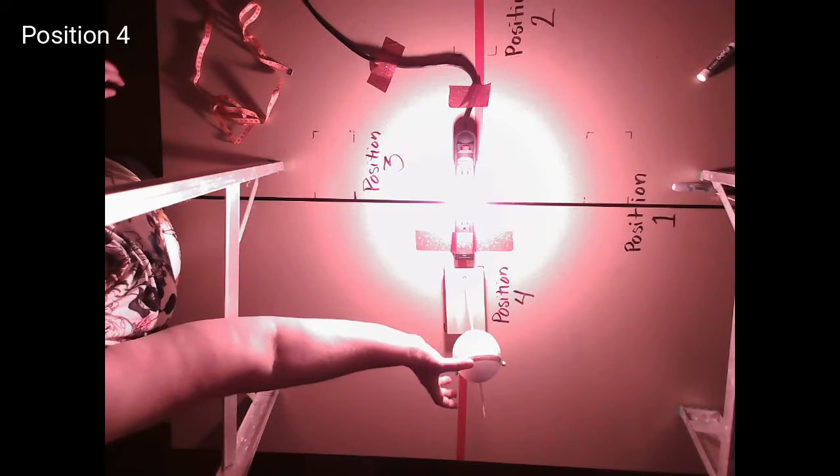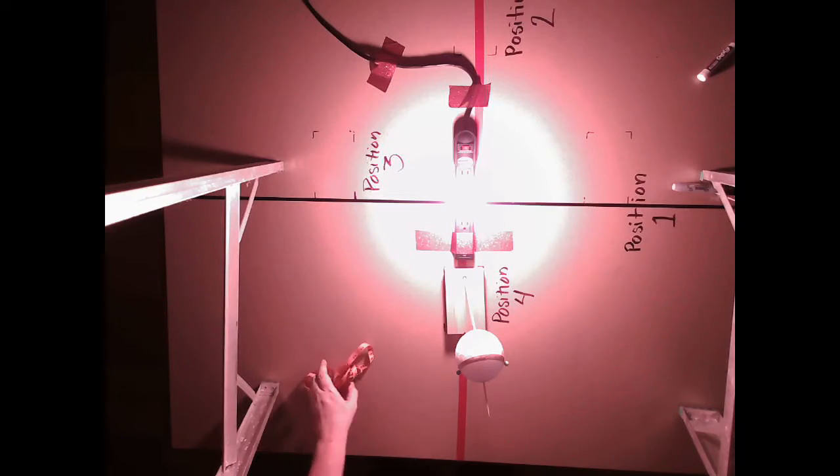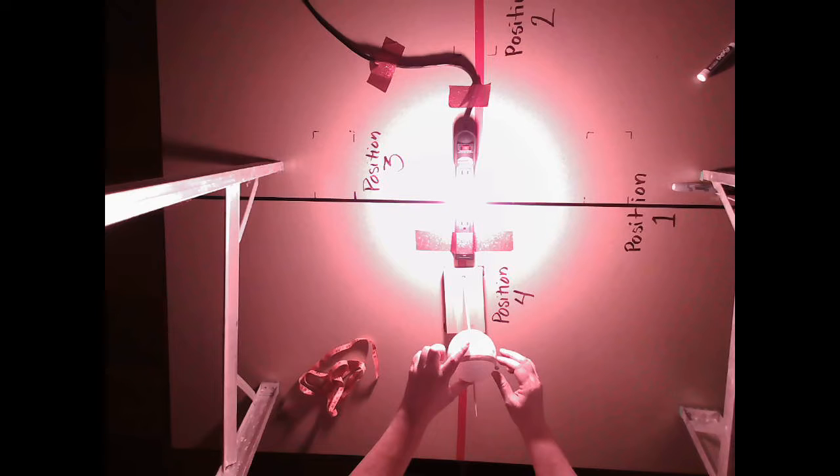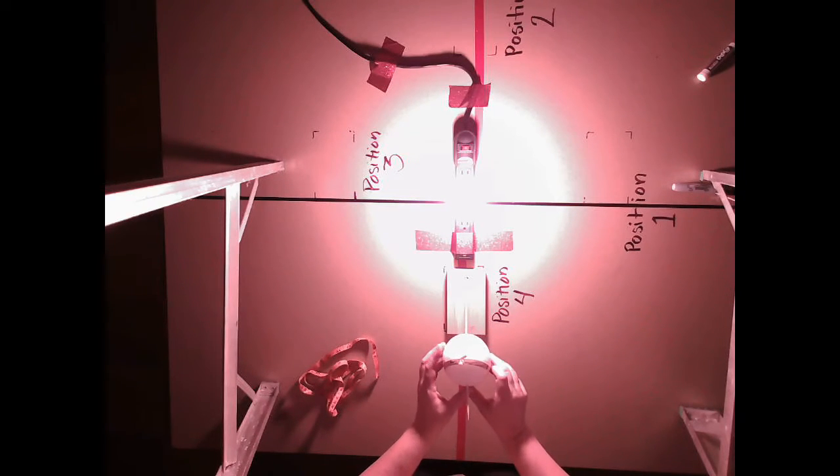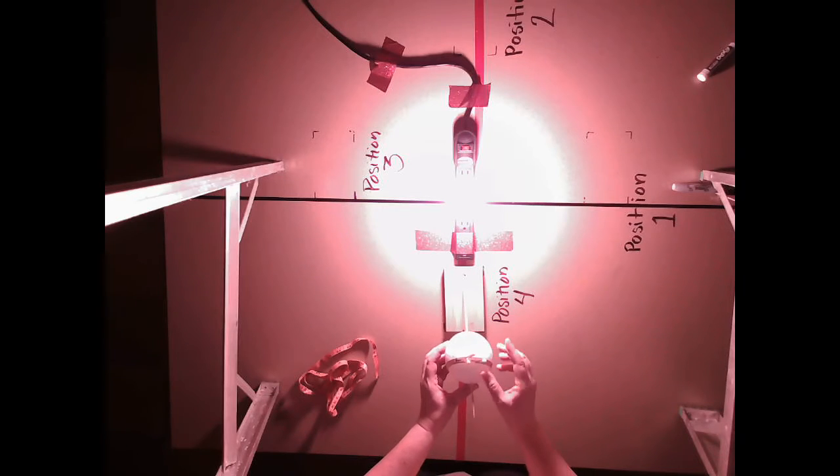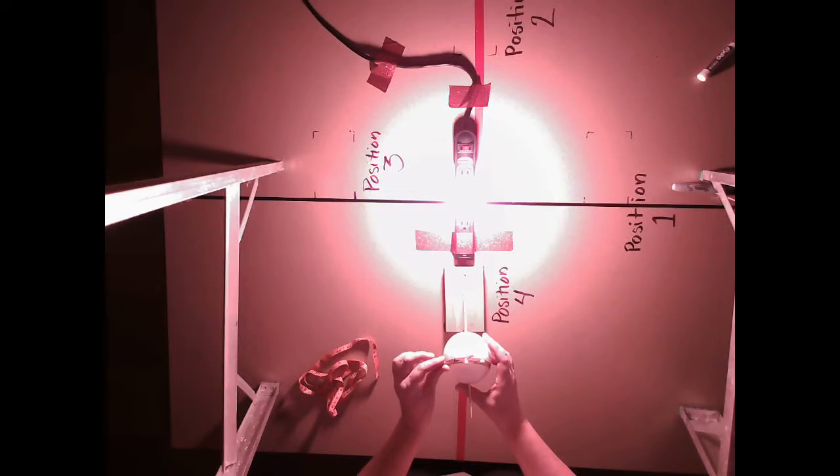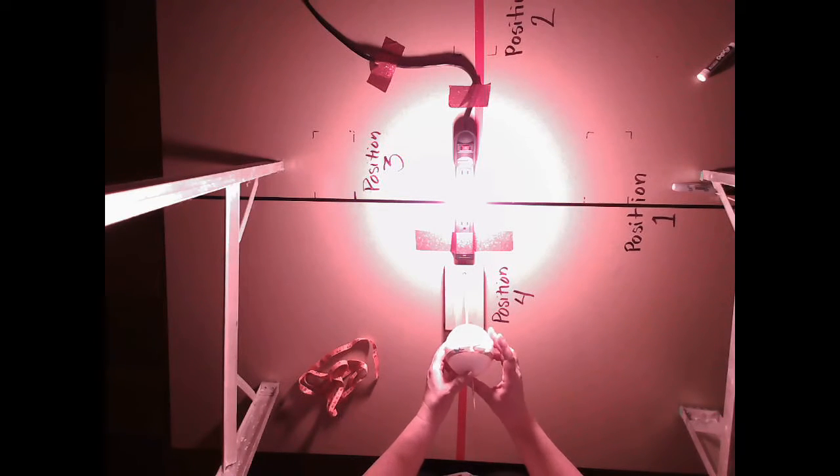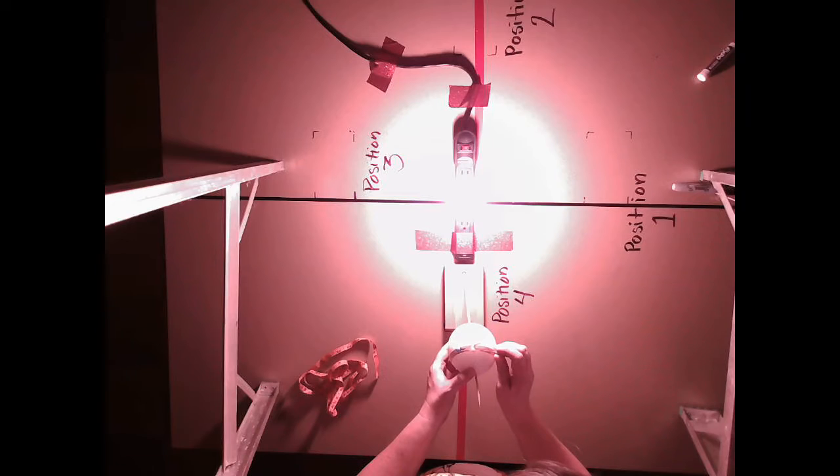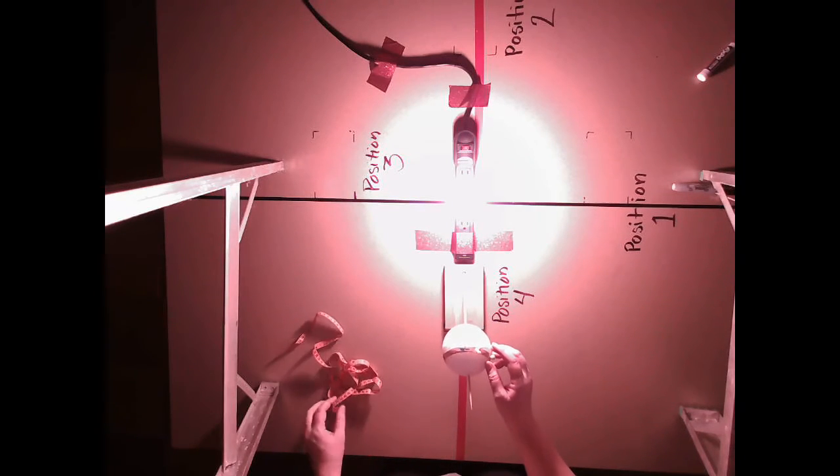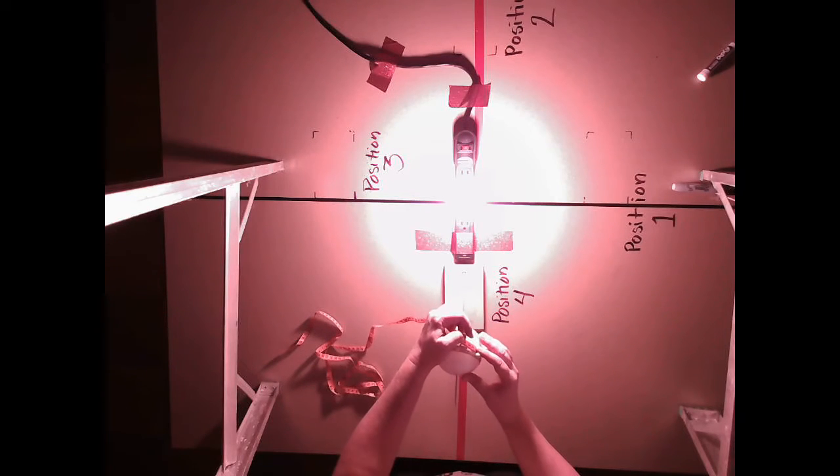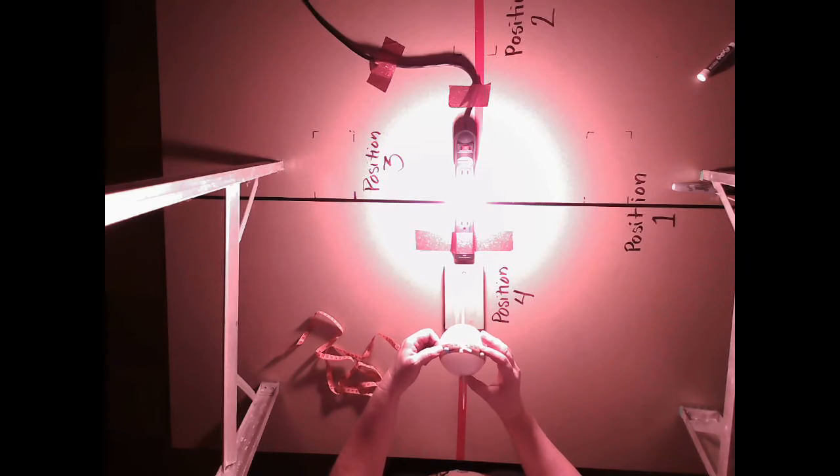And now we are going to move it to position four. So let's go ahead and remove those push pins. We are going to move our person so he is facing towards the Sun, and then put our push pins where the Sun meets the dark. I think we are off a little here. So let's go ahead and measure that. And we are at seven and a half centimeters.